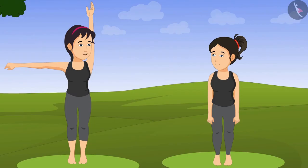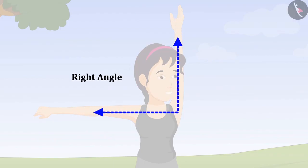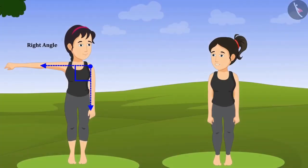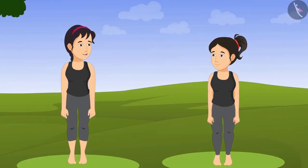Got it, Riva? Hey Didi, this looks like the letter L. I will also make a right angle. Very good, Riva. So then tell me whether this is also a right angle? Yes, Riva, this is also a right angle. Here also a vertical line and a horizontal line are joined together. Okay, this means angles can be formed in any directions. Yes, Riva.